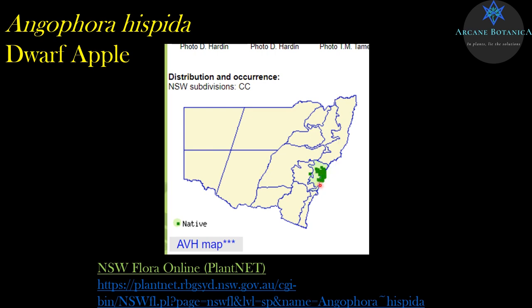If we were to find Angophora hispida outside its known range, you'd definitely want to collect a herbarium specimen and lodge it to the herbarium — that would be what's called an extension of range. We're always looking for that, trying to illuminate that geographic ranges might be further than we know. It's got to be a natural occurrence, not a planted occurrence, and you lodge it to the herbarium saying there's another patch of it here.